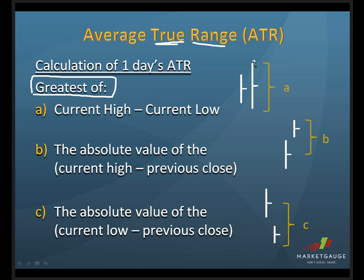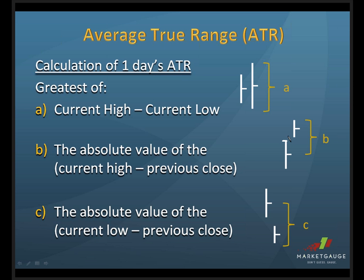What you do is take the greatest of these three possible scenarios. First, you look at the range of the day — each one of these bars represents a daily bar. Simply the high minus the low — figure out that value; that's option A. The second option is to look at the distance from the prior day's close all the way up to the current day's high. The reason to do this is that if there's a gap, you're going to account for that gap. If we're just looking at situation A — just the high minus the low — a stock could have gapped up five dollars but if the range for the day was only 50 cents, you'd be saying the stock's range was just 50 cents.